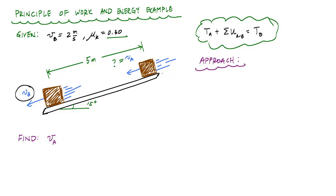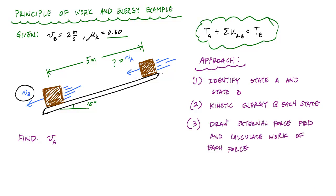The way we're going to approach this problem is: first, we're going to identify the beginning and the end, the A and B for the states. Next, we want to determine the kinetic energy at each of these states. Then we want to draw a free body diagram between our two states A and B, and look at all the external forces and see what work each external force does. After we've done that, hopefully we have a relationship that's solvable, and then we can solve it out.